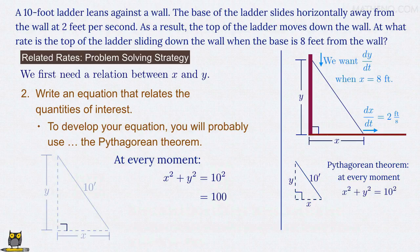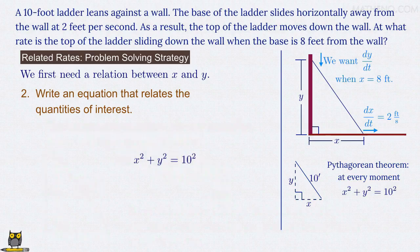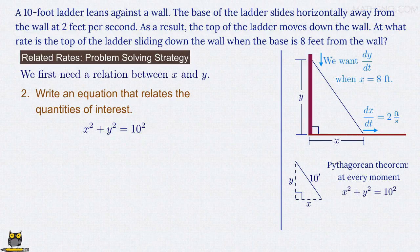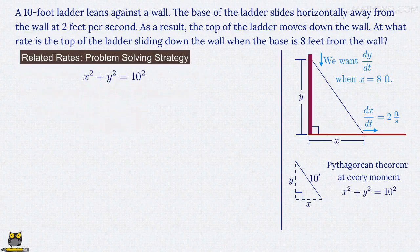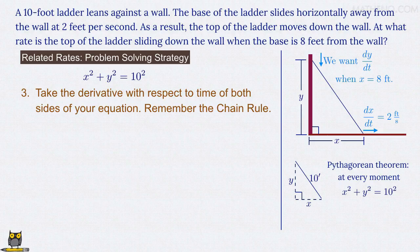And that's it. We now have the relation we need between x and y, and so we're done with the second step of our strategy. That brings us to the third step. Take the derivative with respect to time of both sides of the equation, remembering the chain rule when we do so.